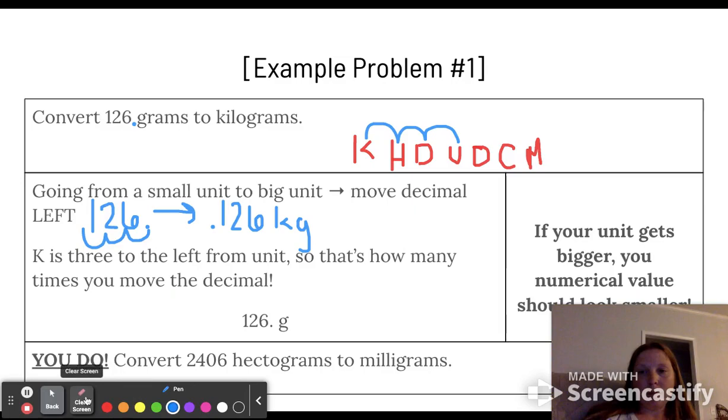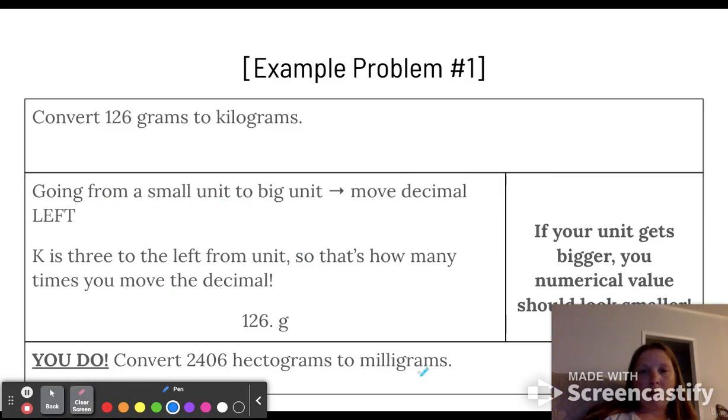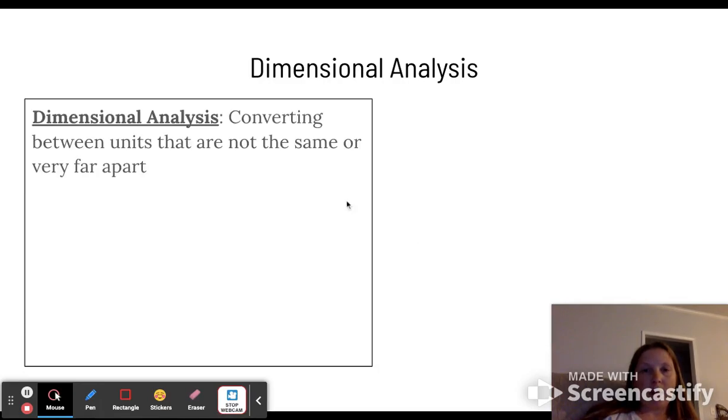Now let's look at dimensional analysis. Dimensional analysis is the actual math setup for converting between units when they're not the same or they're very very far apart. So like if we wanted to go from gram to nanogram, they're very far apart, so we might need to set up some math here to show these conversions.